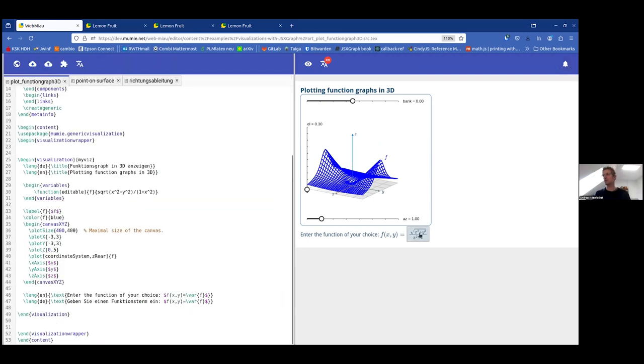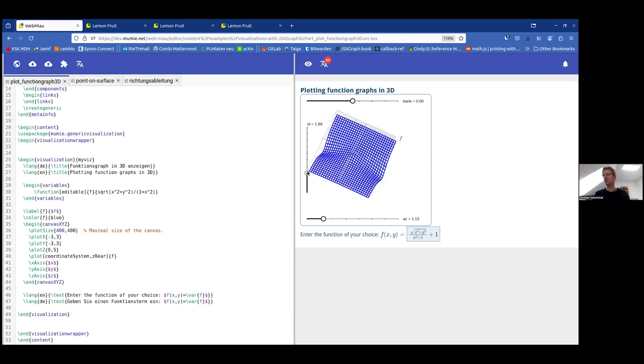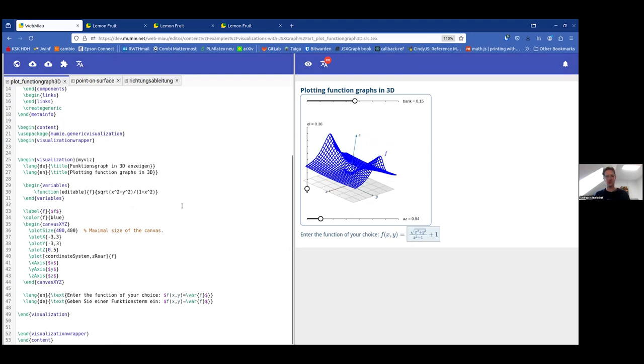I can show you if I change here the code, let's do a plus one, then immediately it goes up. With the sliders, you can move around or also with the mouse, you can move around your drawing. So that's the simplest thing where I wanted to show you how it looks like in Mumia, in the source code, that you define variables which you can use in the canvas and also in the texts and they interact with each other.